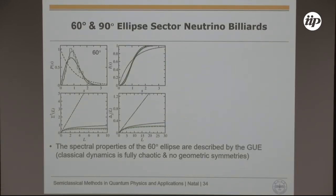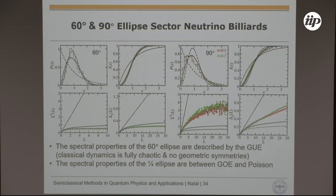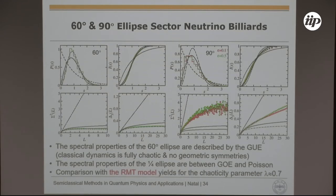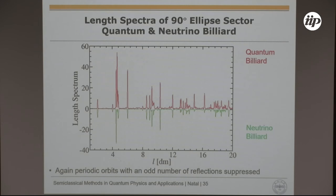For a 60-degree ellipse sector the classical dynamics is chaotic and one indeed finds GUE. For a 90-degree (quarter) ellipse, which is regular, you again find something close to GUE — eccentricity does not play an important role here because the vibrational modes are much smaller. The interpolation parameter lambda is of order 0.7. The length spectrum of the ellipse neutrino billiard again shows peaks only at periodic orbits with an even number of reflections.